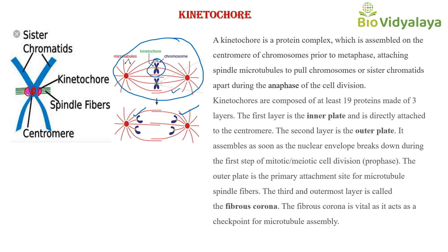The kinetochore is assembled prior to metaphase — that means during pro-metaphase. Spindle fibers attach to this kinetochore and pull the chromosomes or sister chromatids apart during anaphase of cell division. So the kinetochore is a protein complex to which spindle fibers attach during cell division.